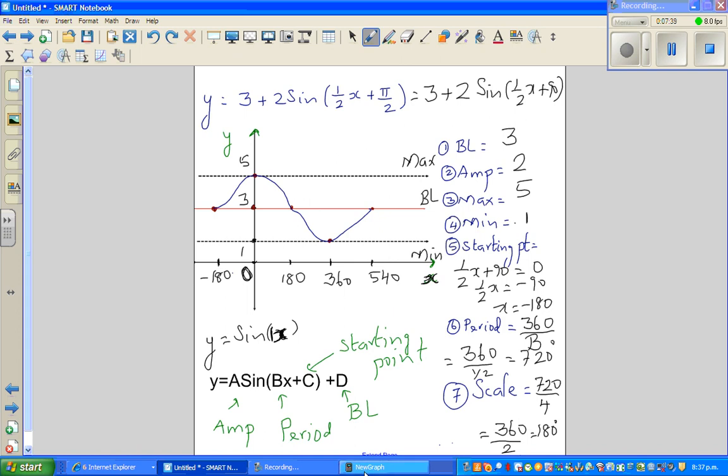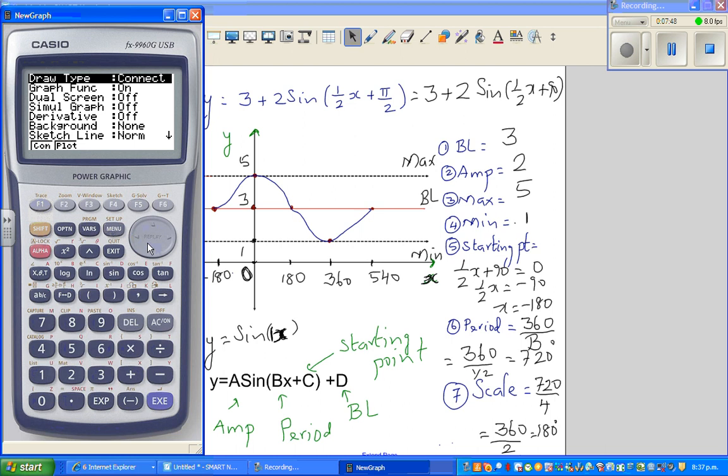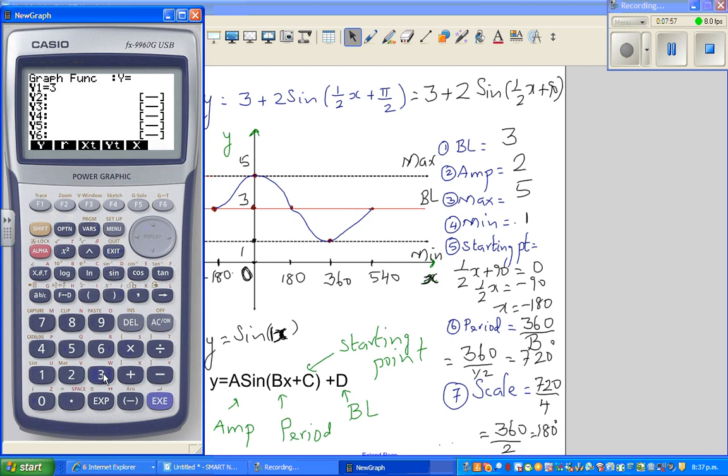Let's check this on the calculator. Before you go to the graph, always look at the setup. This is in degrees, we're working in degrees. We'll change this into radians later. Now I'll type the equation: three plus two sine bracket 0.5x plus 90. Now we need to change the scale. We need a trig scale from minus 180 to 540, and a scale of 180 degrees. We want to go from 0 to 5, and a scale of 1 would do. Let's go to 0 to 6, so we can see the whole graph properly.